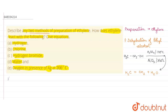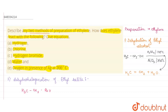The second method is dehydrohalogenation of ethyl halide. The reaction is: CH₃–CH₂–Br treated with alcoholic KOH, which gives CH₂=CH₂ plus HBr. This is also an ethylene formation reaction. So these are the two methods of preparation.